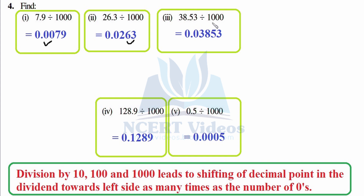For 3853: three shifts from this position — 1, 2, 3. Then for 5 as it is: we were here, 3 shifts — 1, 2, 3 — so the answer is 0.0005. Had it been 10,000 then we would have shifted from this position 4 times — 1, 2, 3, 4 — that would have been 0.00005.